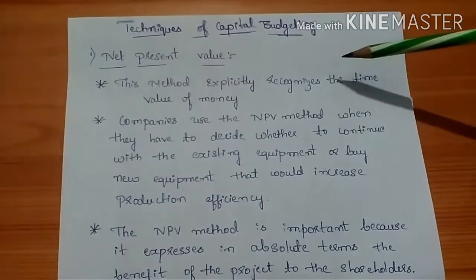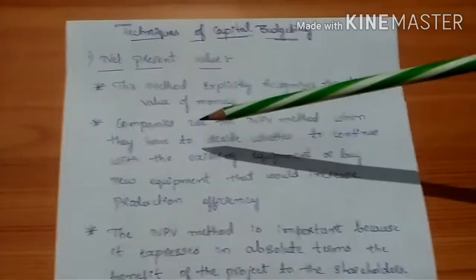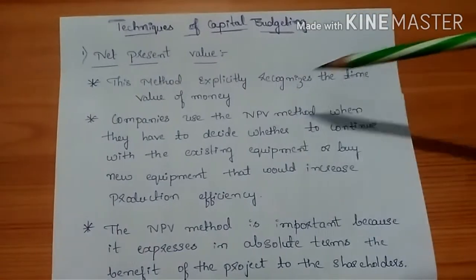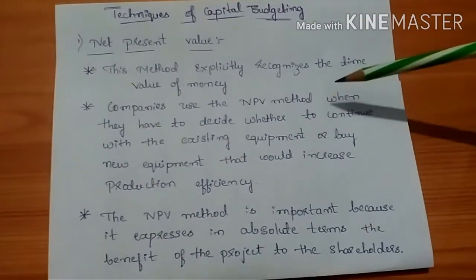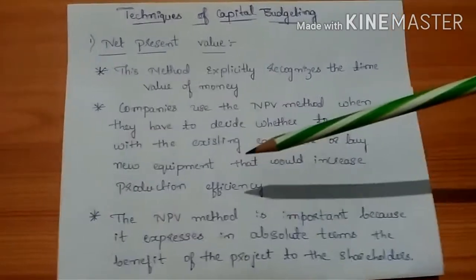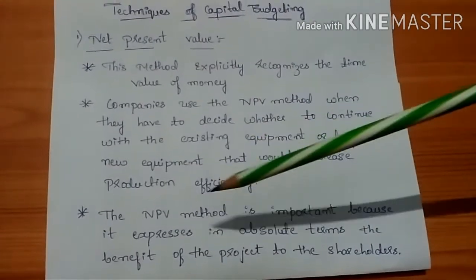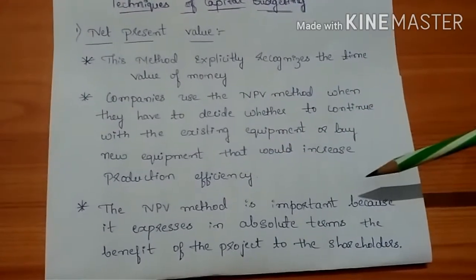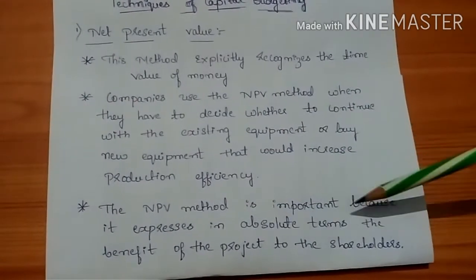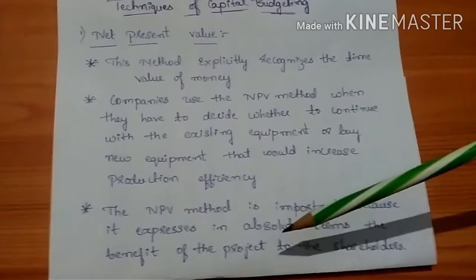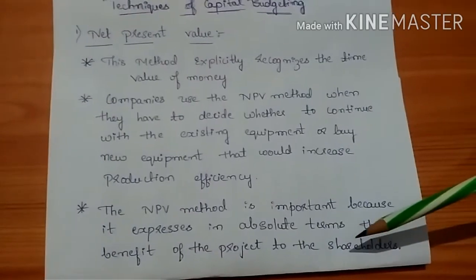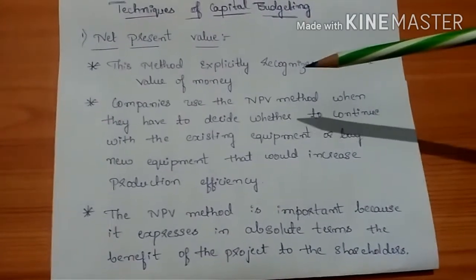This method explicitly recognizes the time value of money. Companies use the NPV method when they have to decide whether to continue with existing equipment or buy new equipment that would increase production efficiency. The net present value method is important because it expresses in absolute terms the benefit of the project to the shareholder.